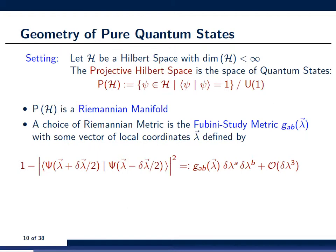Now, below you see the definition of the Fubini-study metric tensor. On the left-hand side, you note that what the Fubini-study metric is essentially measuring is the overlap of two wave functions that are separated in parameter space by a very tiny amount delta vector of lambda.